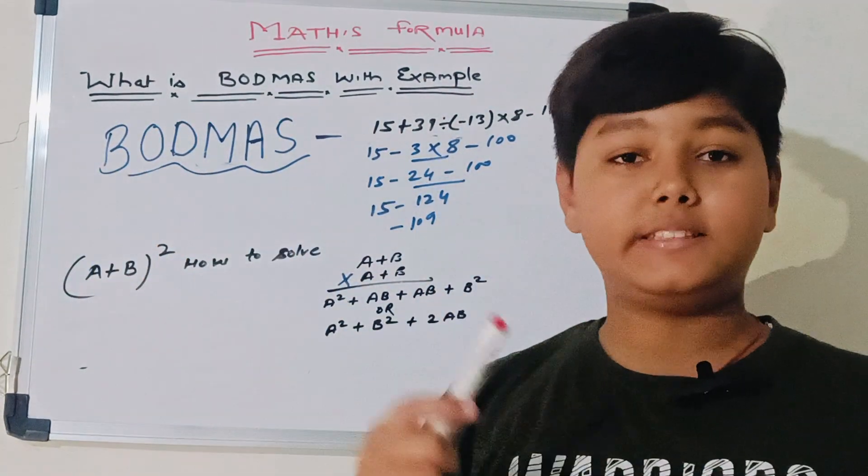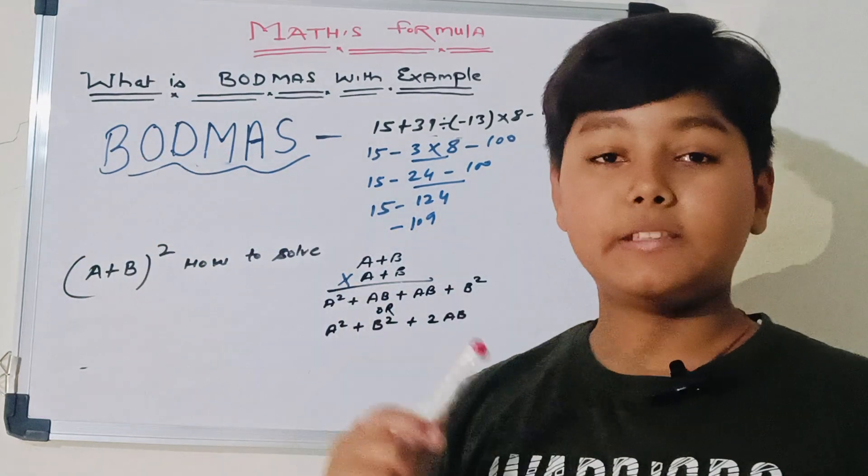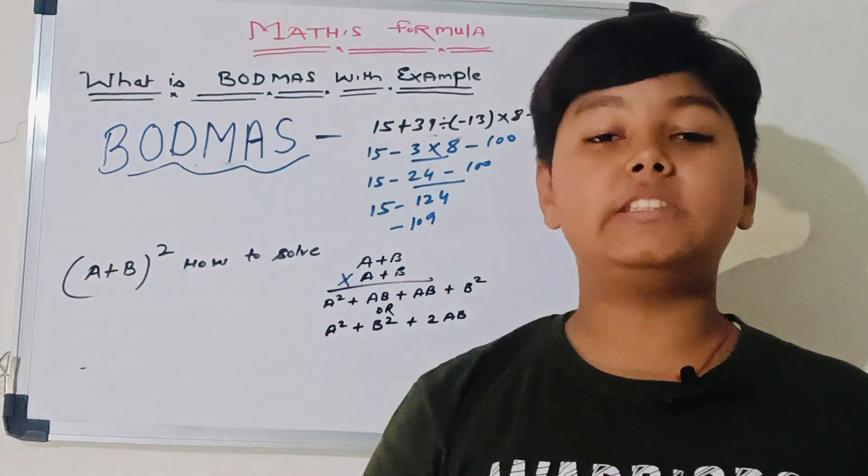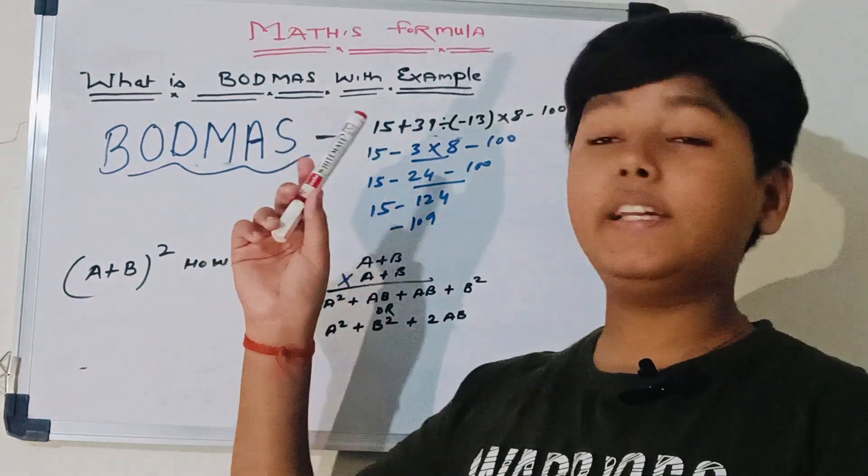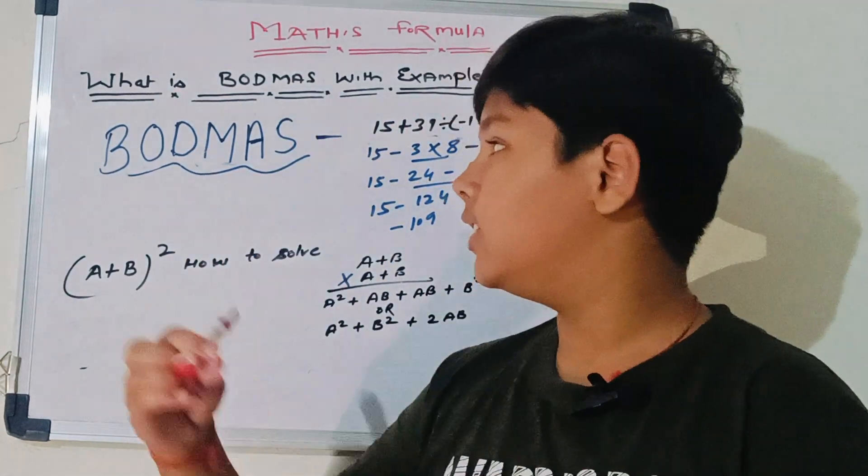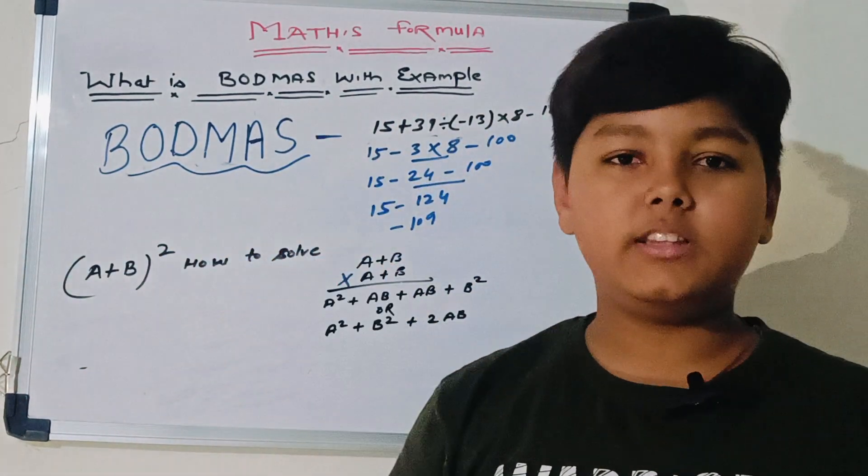B represents brackets, O represents of, D represents divide, M represents multiplication, A represents addition, and finally S represents subtraction. We have to solve the equation in this series.